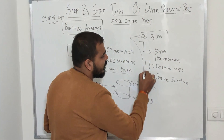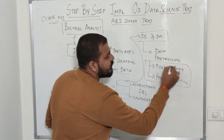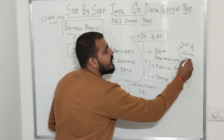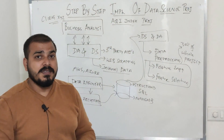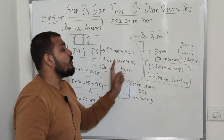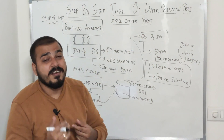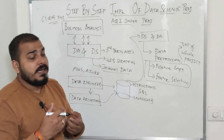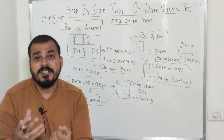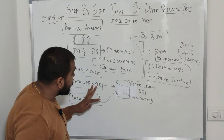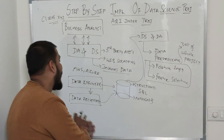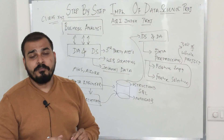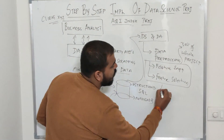This feature engineering and selection step takes about 30% of the whole project time. It is a very tedious task that must be done carefully, because if something is missed you have to cycle back. You may even need to go back to the data engineering team to collect additional features, making it critical to get this step right the first time.